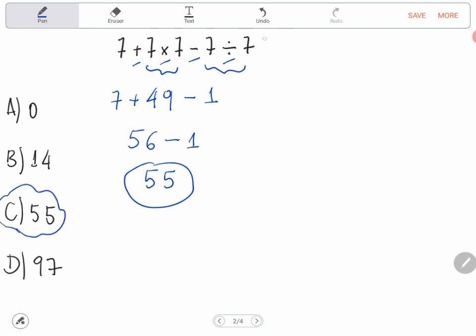Some people can start all of these operations in this order. Let me write here again: 7 plus 7 times 7 minus 7 divided by 7.